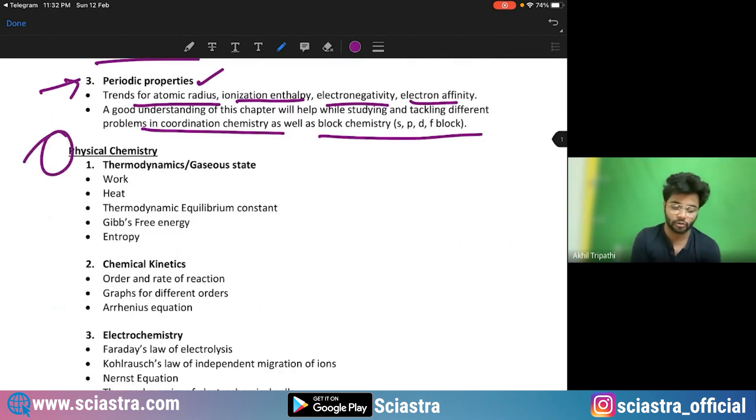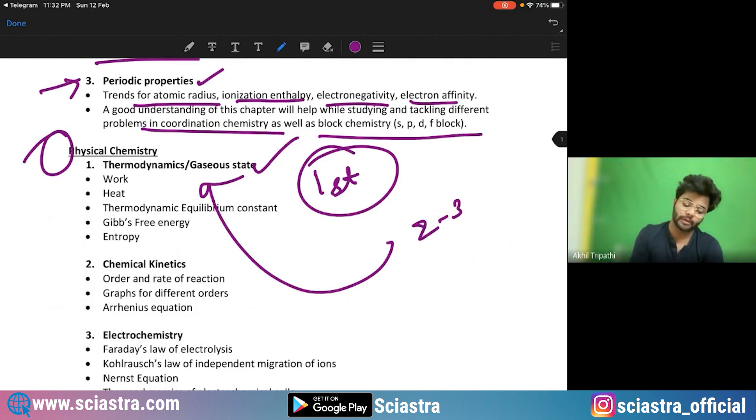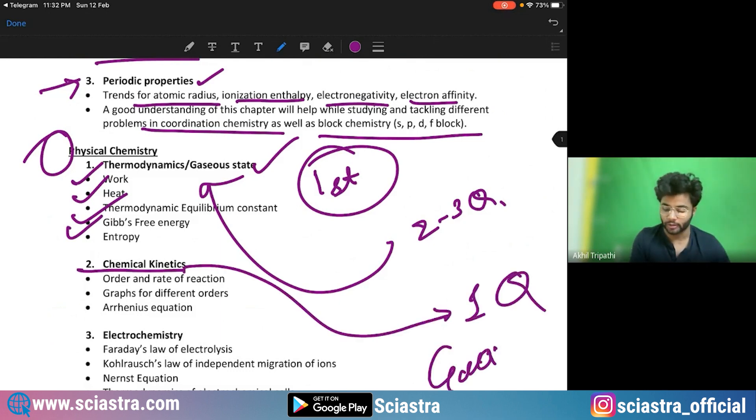Coming to physical chemistry. First of all, thermodynamics, this is the top priority. Thermodynamics is guaranteed two to three questions guaranteed. From there, from work, heat, thermodynamic equilibrium constant, Gibbs energy and entropy. Chemical kinetics, one question guaranteed, I am telling you.